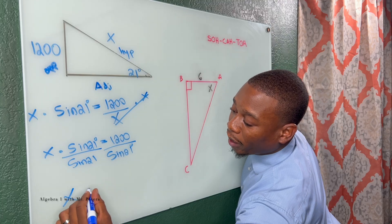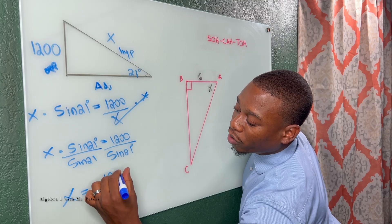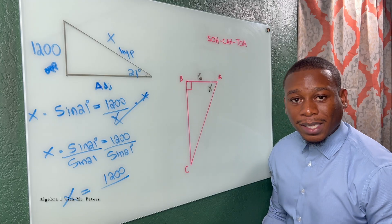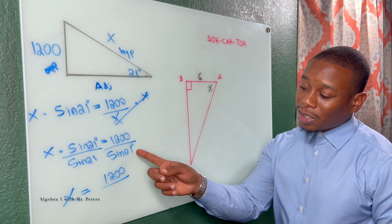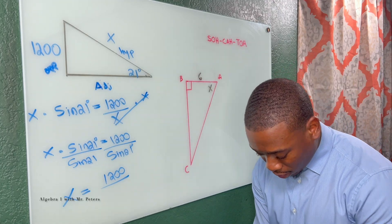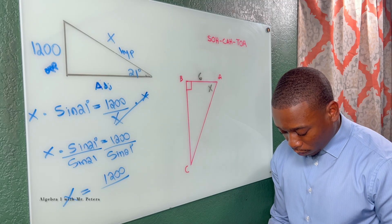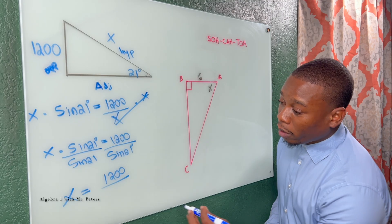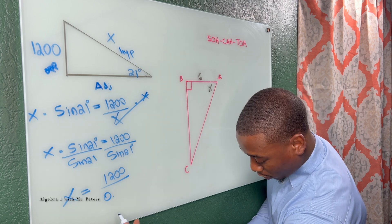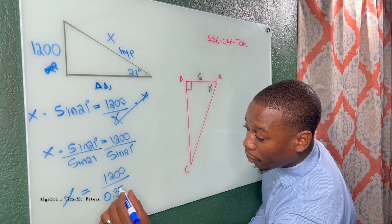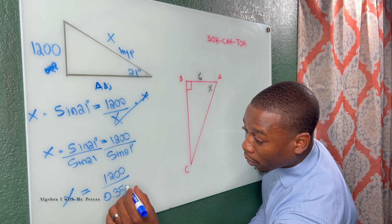So what I want to do now is X is equal to 1200 divided by sine 21. So let's change this into its decimal form. So when I go ahead and do sine 21, I get 0.3584.